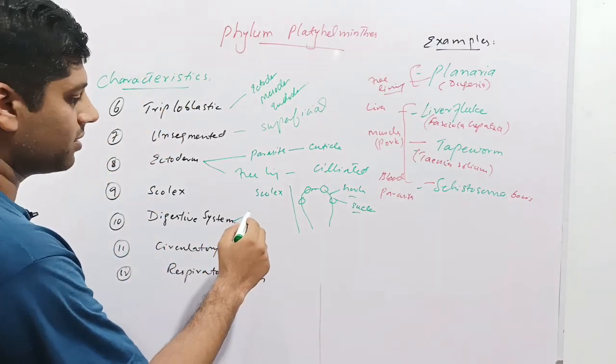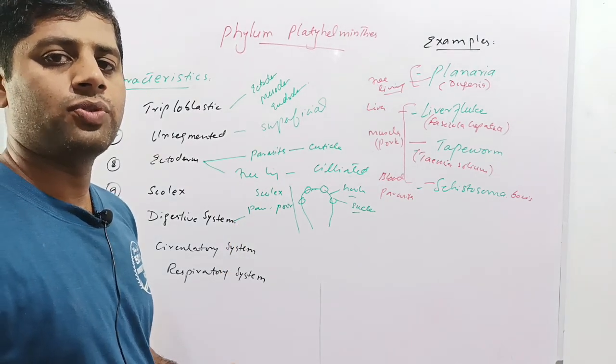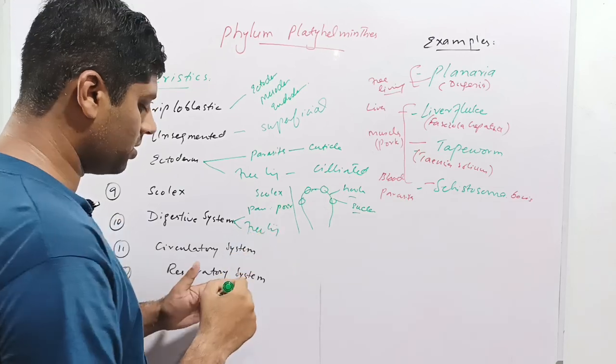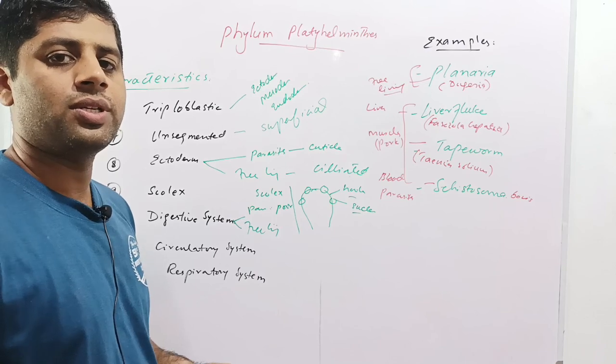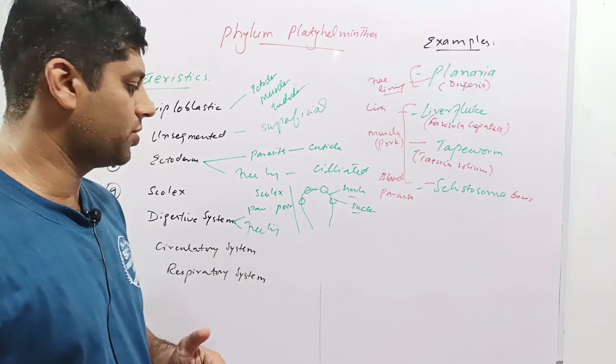In parasites, the digestive system is poor because parasites get ready-made food from the host. In free-living organisms, the digestive system is well-developed. In planaria, which is free-living, the digestive system is well-developed so that nutrients may be digested properly to get nutrition.